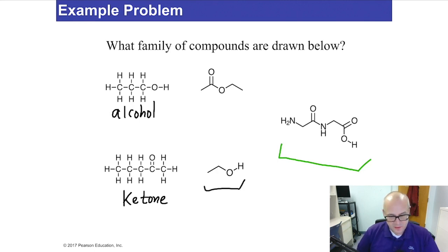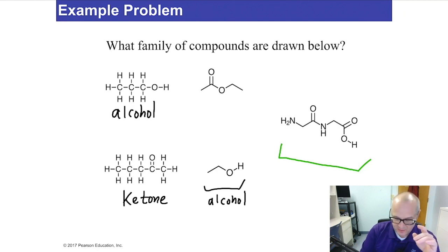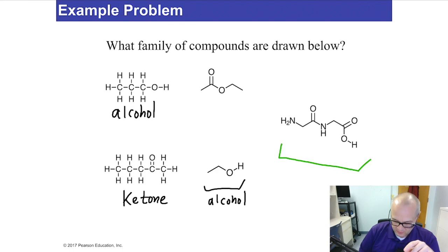Now we have some skeletal structures — this is another alcohol. How about this one? There's that carbonyl — is there a hydrogen on it? No, so it's not an aldehyde. Is there any atom besides carbon bonded to it? Yes — there's that oxygen. When there's an oxygen bonded to a carbonyl, there are two choices: carboxylic acid or ester. If it was a carboxylic acid, this group would have to be a hydrogen. But it's not — it's a carbon-based group. So it must be an ester.